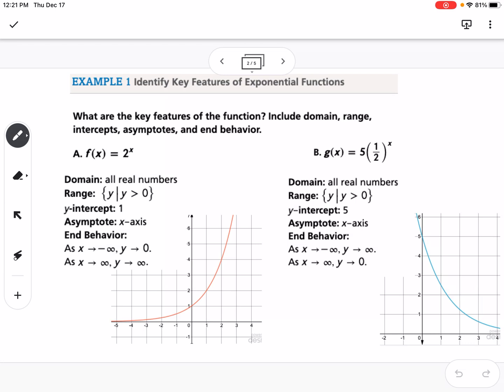So the first example looks at two different exponential equations. The first one is f of x equals 2 to the x, so you can see the graph down here.